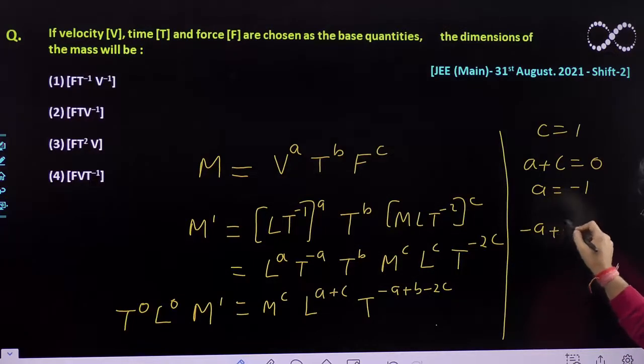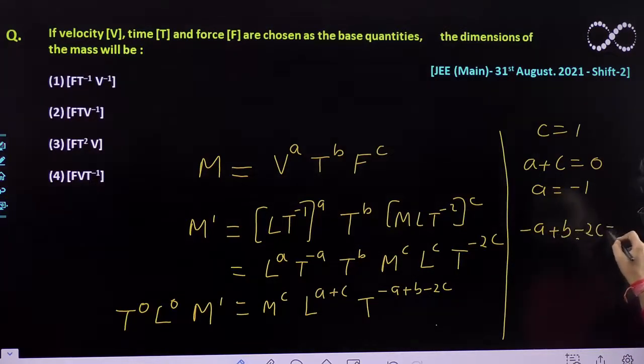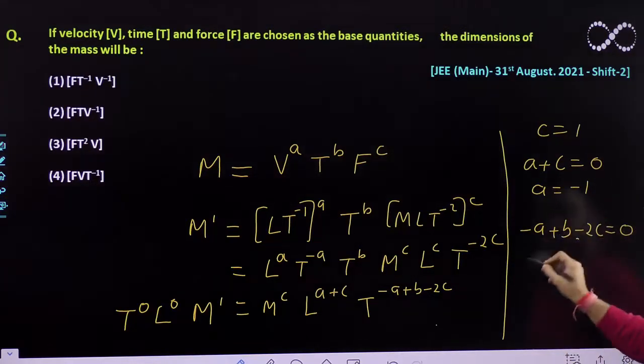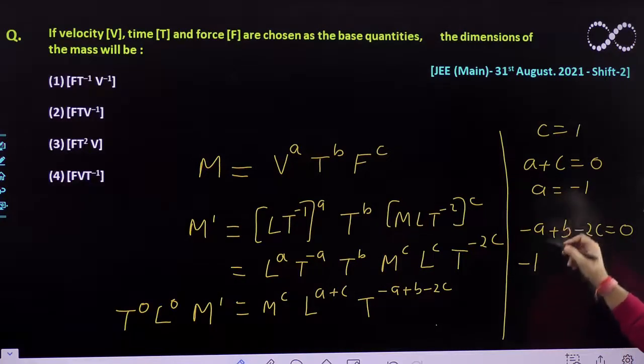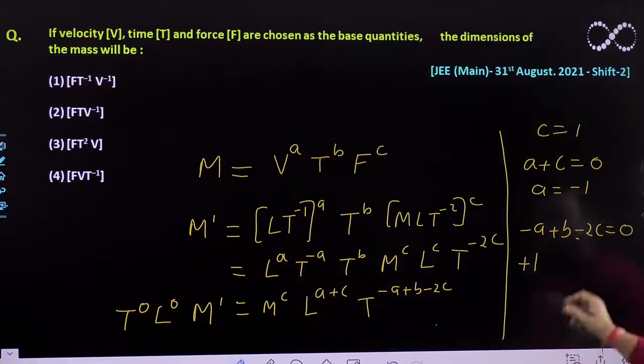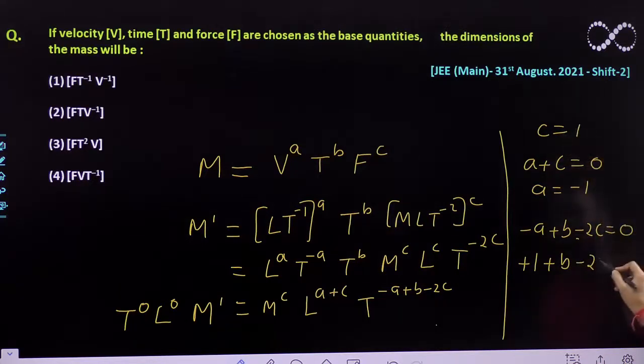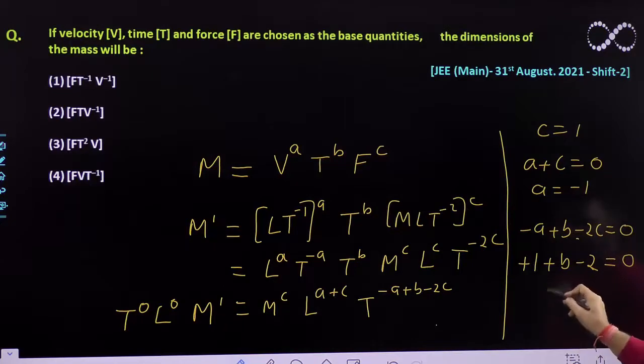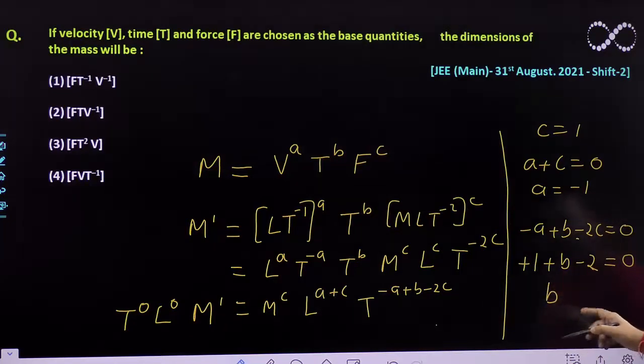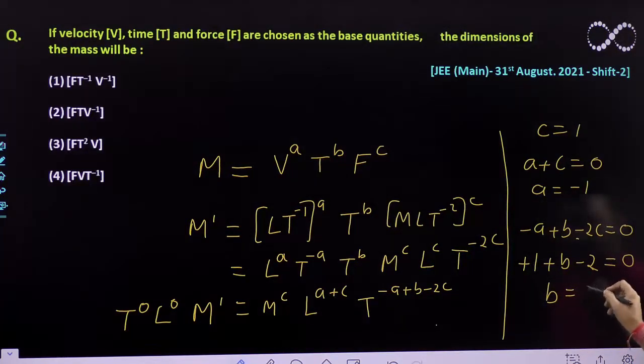Also, -a+b-2c is equal to 0. a is -1 so it would be +1+b-2c. c is 1 so it would be -2, must be equal to 0. So from here you can easily get the value of b as +1.